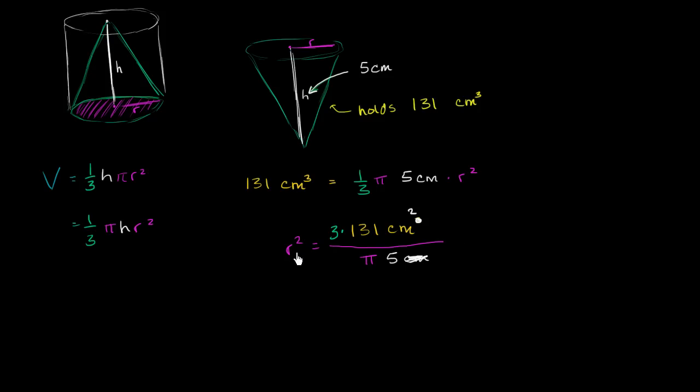And then to solve for r, we could take the square root of both sides. So we could say that r is going to be equal to the square root of three times 131 is 393 over 5 pi. Over 5 pi, so that's this part right over here. And the square root, once again, remember we can treat units just like algebraic quantities. The square root of centimeters squared, well that's just going to be centimeters. Which is nice, because we want our units in centimeters.